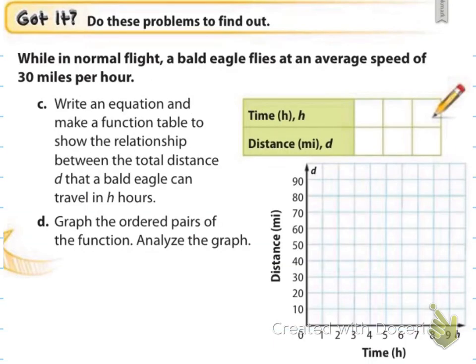For C and D you're going to work on your own. While in normal flight, a bald eagle flies at an average speed of 30 miles per hour. Please complete C and D — the table and the graph — and we'll come right back. Pause the video now.